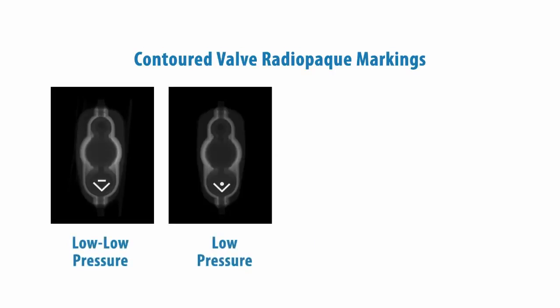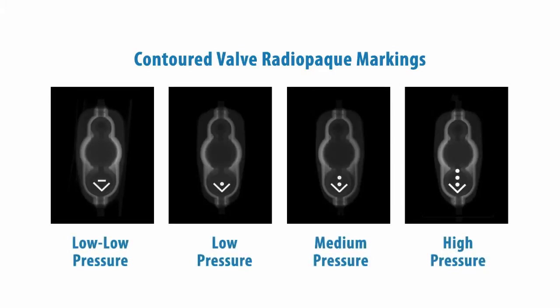Additionally, the contoured valve has radiopaque markings. The dot codes indicate valve pressure level and the arrow indicates direction of flow.